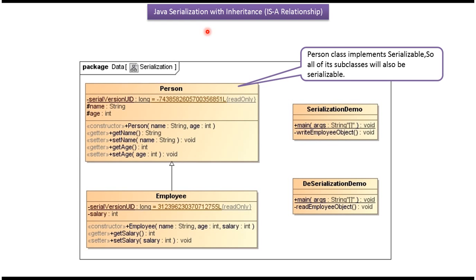In this video tutorial I will cover Java Serialization with IS-A Relationship. Here you can see the Employee class which extends the Person class, so Employee IS-A Person — that is an IS-A Relationship. If the Person class implements the Serializable interface, then automatically all of its subclasses will also be Serializable. So in this case, the Employee class will also be Serializable, because Employee class extends Person class.